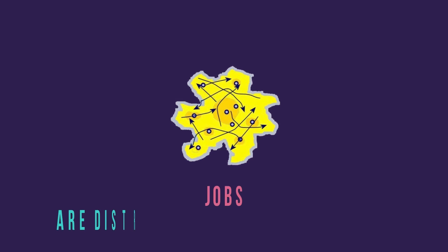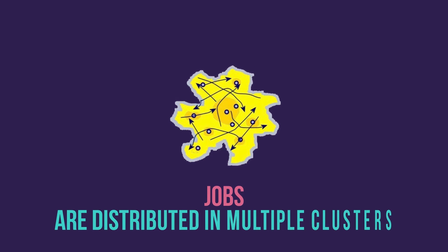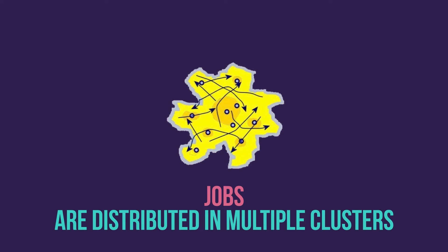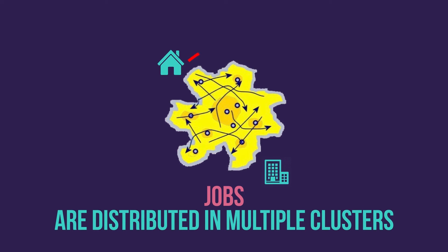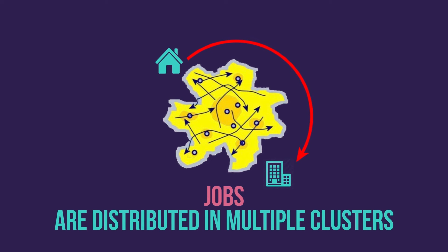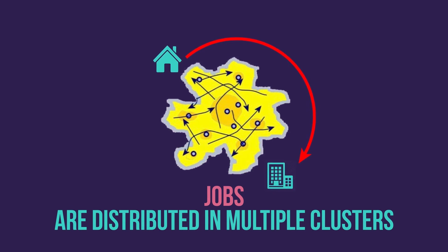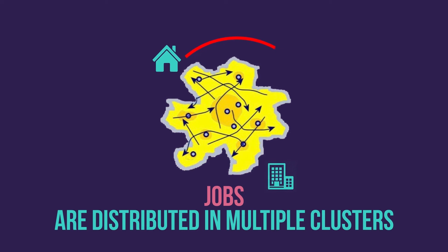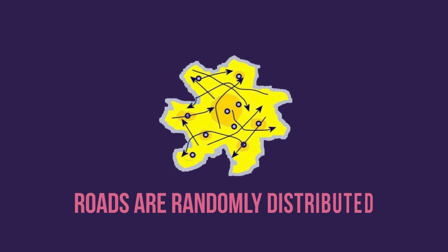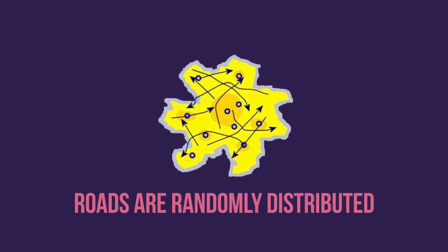The dispersed model. Jobs in this city are distributed in multiple clusters. Theoretically everyone is better off since they can locate their homes near their offices. In reality, someone's home could be located at the far end of the city and thus might have to travel from edge to edge. The roads of this model are randomly distributed.